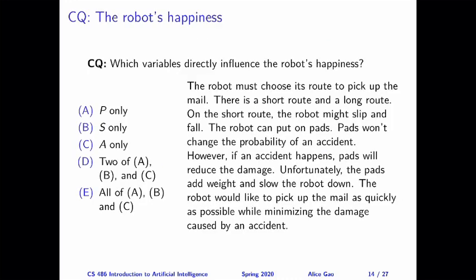Here's the first question: which variables directly influence the robot's happiness, or the robot's utility? I've put the story here again, and your choices are only paths, only short, only accident, two of the three variables, or all three variables. Think about this for a bit, and then keep watching for the answer.